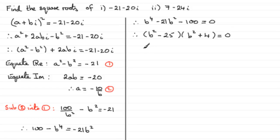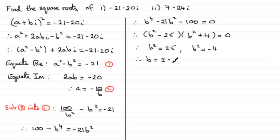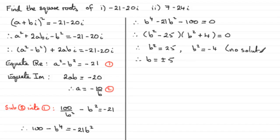Each factor must equal zero. From the first factor, b squared equals 25. From the second factor, b squared plus 4 equals 0, so b squared equals minus 4, which would give b equals plus or minus 2i. But b must be a real value, so there's no real solution from that factor. From b squared equals 25, b equals plus or minus 5.